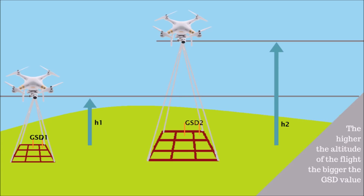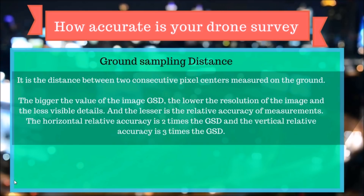Remember that GSD is related to flight height — the higher the altitude of the flight, the bigger the GSD value. Here's a simple formula: the horizontal relative accuracy is 2 times the GSD, and the vertical relative accuracy is 3 times the GSD.